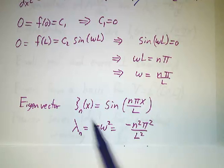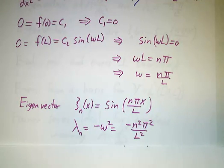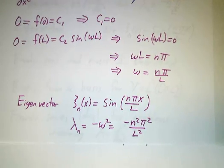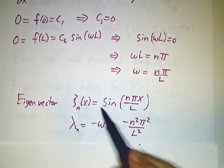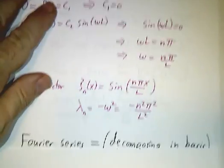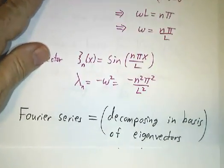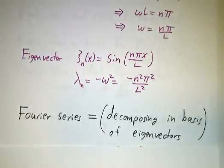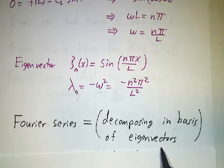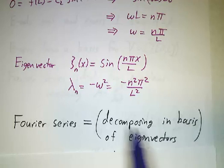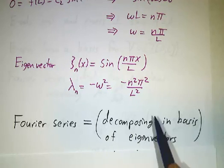We've seen this before — this is Fourier series. The eigenvectors of the second derivative operator are exactly the Fourier modes. When we decompose a function in a Fourier series, we're just decomposing it in a basis of eigenvectors. We know it forms a basis because the operator is Hermitian and Hermitian operators are diagonalizable.